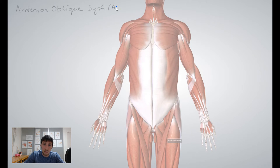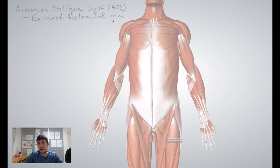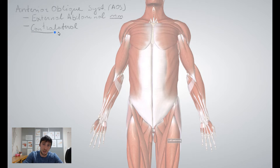The muscles included are: external abdominal oblique muscles. These are all going to be external, outer unit structures. Then we have the contralateral — two words: contra-lateral — contralateral internal abdominal oblique.